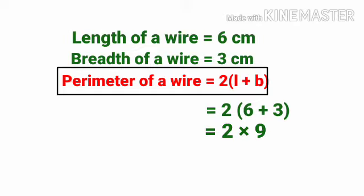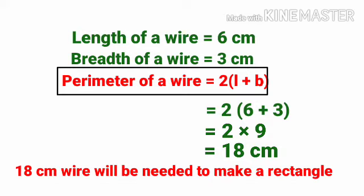2 into 9 equals 18. The answer is 18 cm with the same unit. Perimeter of the wire is equal to 18 cm. So 18 cm of wire will be needed to make a rectangle.